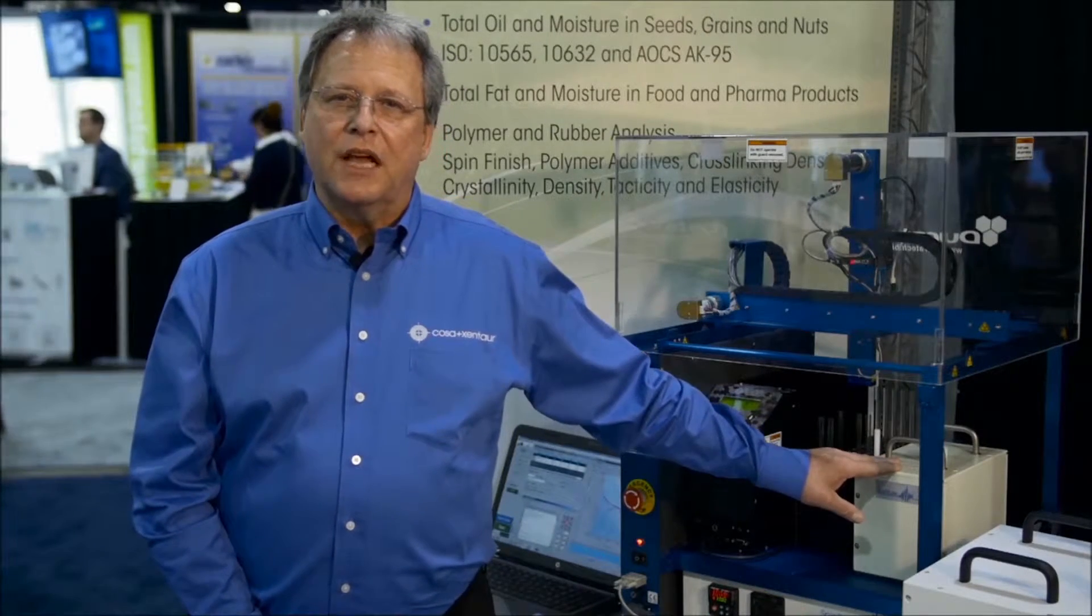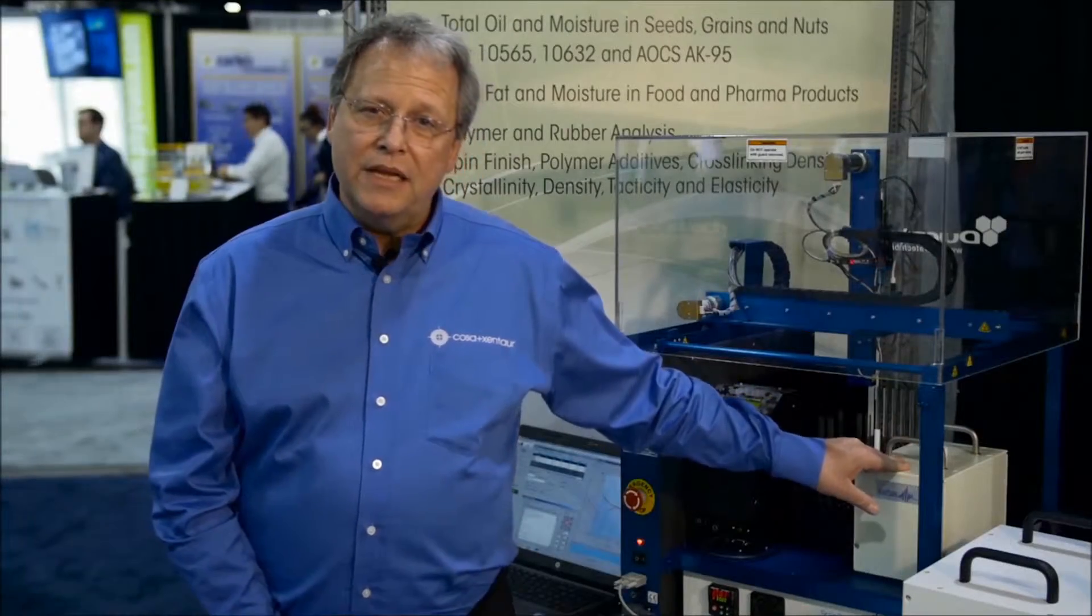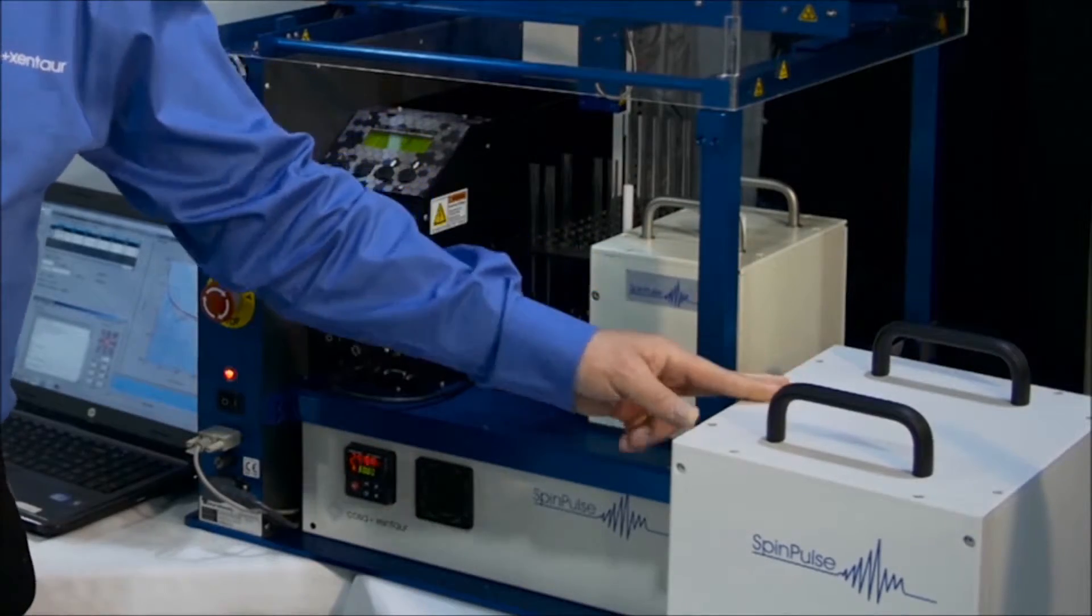What magnet you choose depends upon the sample size and type of sample you're measuring. It comes in three basic configurations: a 10 mil magnet, a 20 mil magnet which as you can see is much larger, and then the 40 mil magnet that's the same footprint but a larger sample.